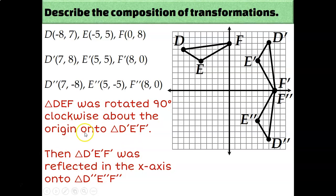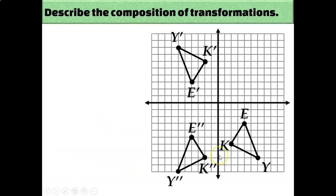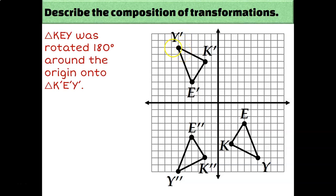So this was the composition of transformations that took us from triangle DEF to triangle D''E''F''. Always make sure you're going in the right order — from the pre-image which has no apostrophes, to the first image which has one apostrophe, to the final image which has two apostrophes. From triangle KEY to triangle K'E'Y', it was a rotation of 180 degrees. You can identify that by connecting corresponding points and noticing they cross over each other, intersecting at the origin. You can also compare coordinates: Y was the point (6, -8) and Y' is the point (-6, 8), so that's the rule (x, y) becoming (-x, -y), which is the rule for a 180-degree rotation.